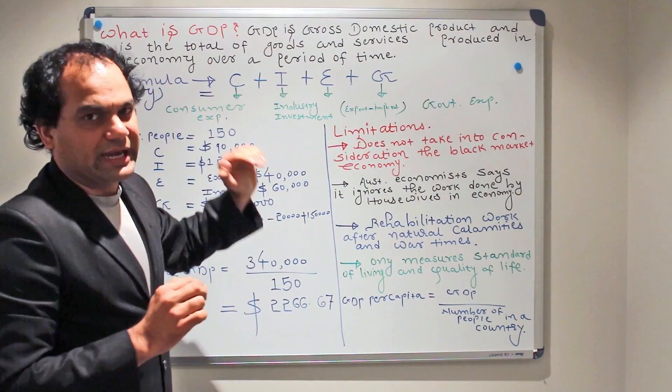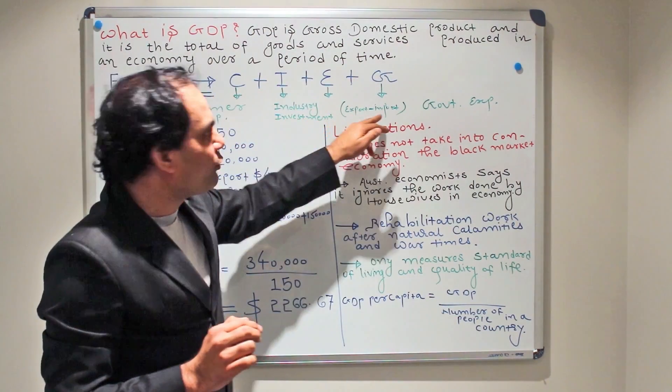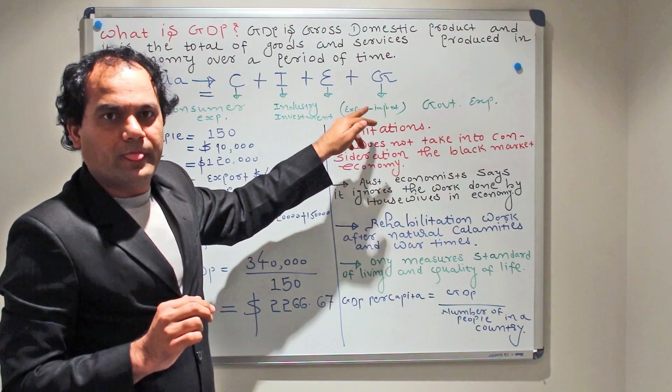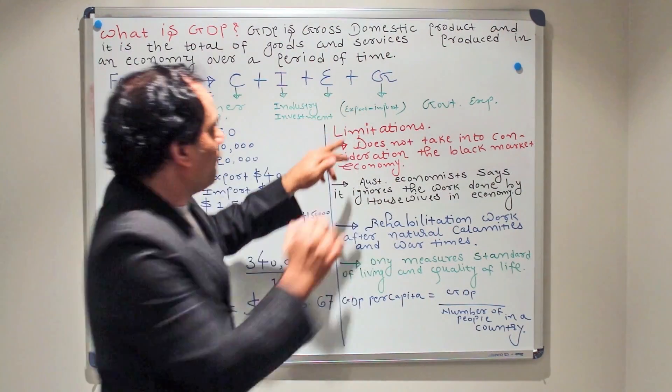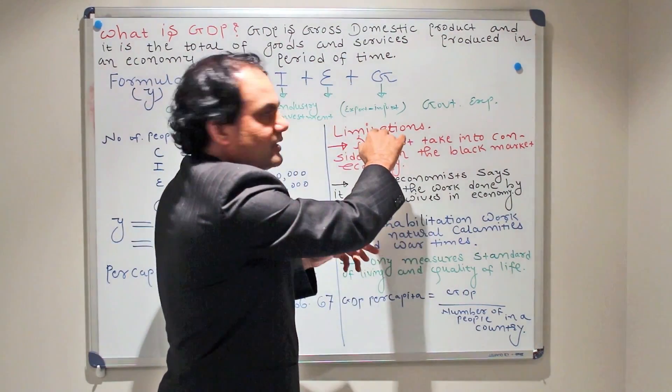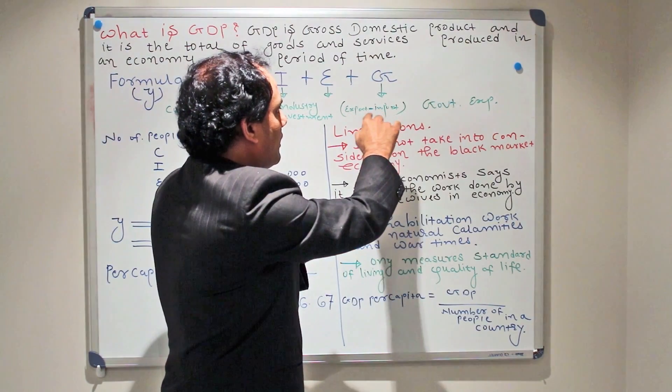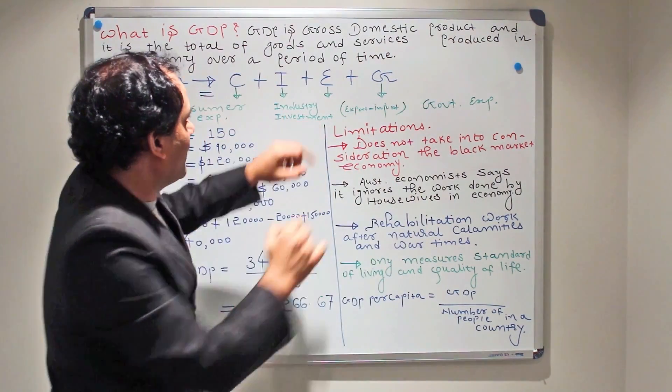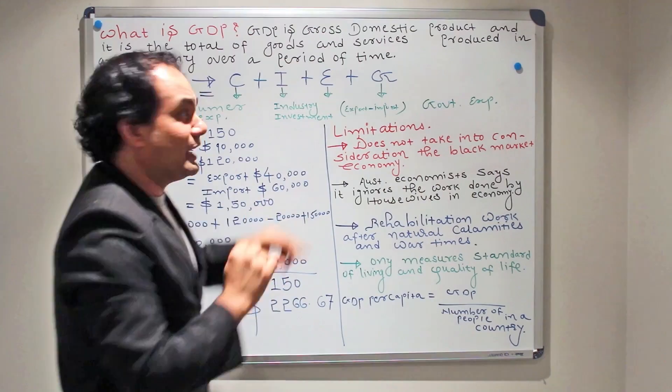Then comes E. Now E is a little bit tricky concept. You will have to pay attention to understand E. E really stands for export minus import. So whatever the final figure you get once you do export minus import, that final figure you have to write here. It may be plus, it may be minus, depending upon whether export is greater or import is greater.